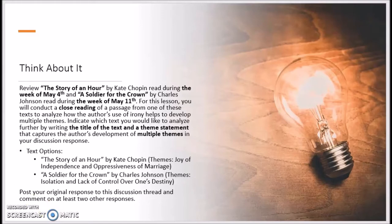Remember that the themes listed are expressed as theme topics, or as I like to think of them, theme seeds. So for The Story of an Hour, you're looking at the joy of independence and the oppressiveness of marriage. For A Soldier for the Crown, you're looking at isolation and lack of control over one's destiny. In order to write a theme statement, you need to elaborate on the topic to think about the message that the author is communicating about that topic in a more specific sentence.